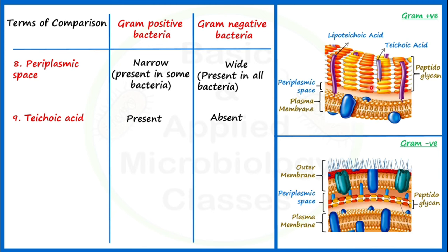Let's see the next point of difference: porin proteins. Porin proteins are absent in gram positive bacteria and present in gram negative bacteria. They generally exist in trimeric form, and when they exist in this trimeric form, they form narrow channels through which small molecules like sugars, starch, and hydrophilic nutrients can easily pass.